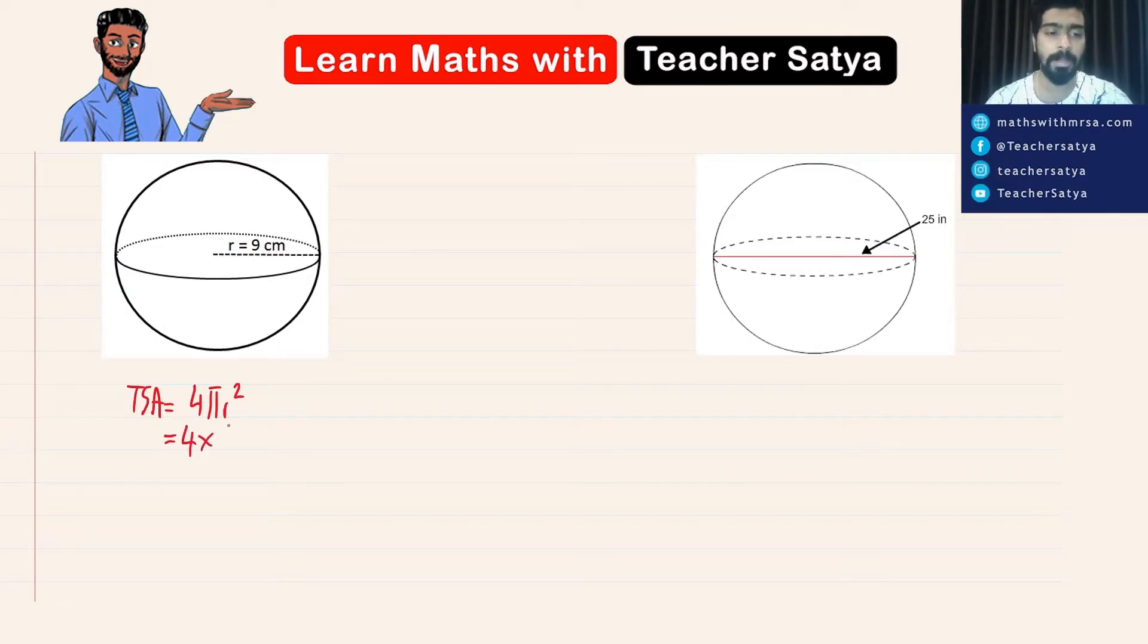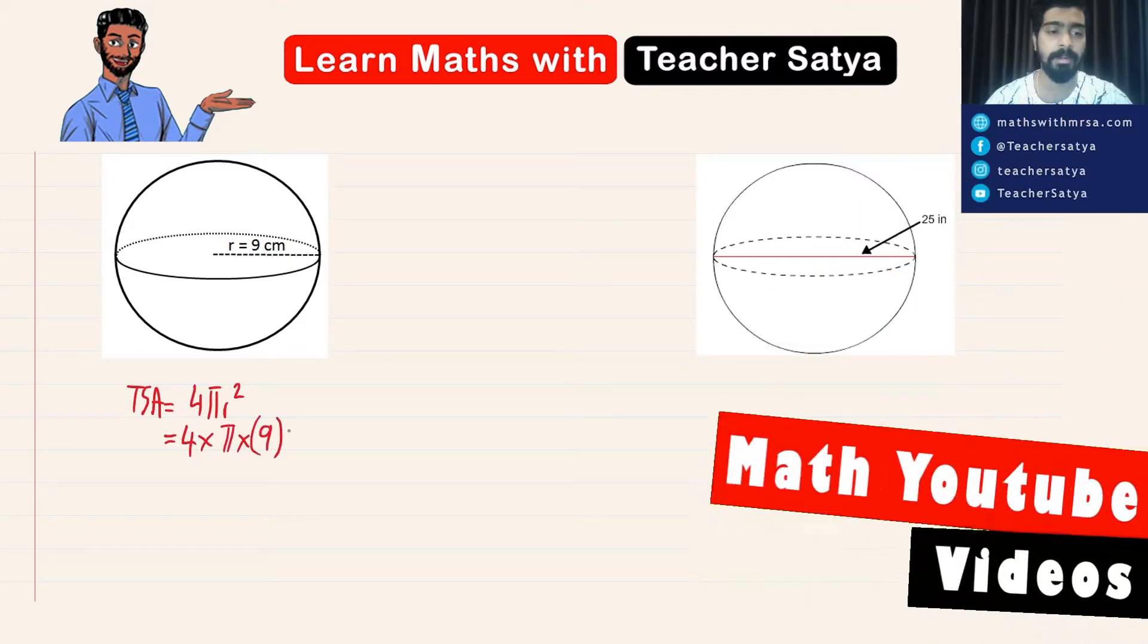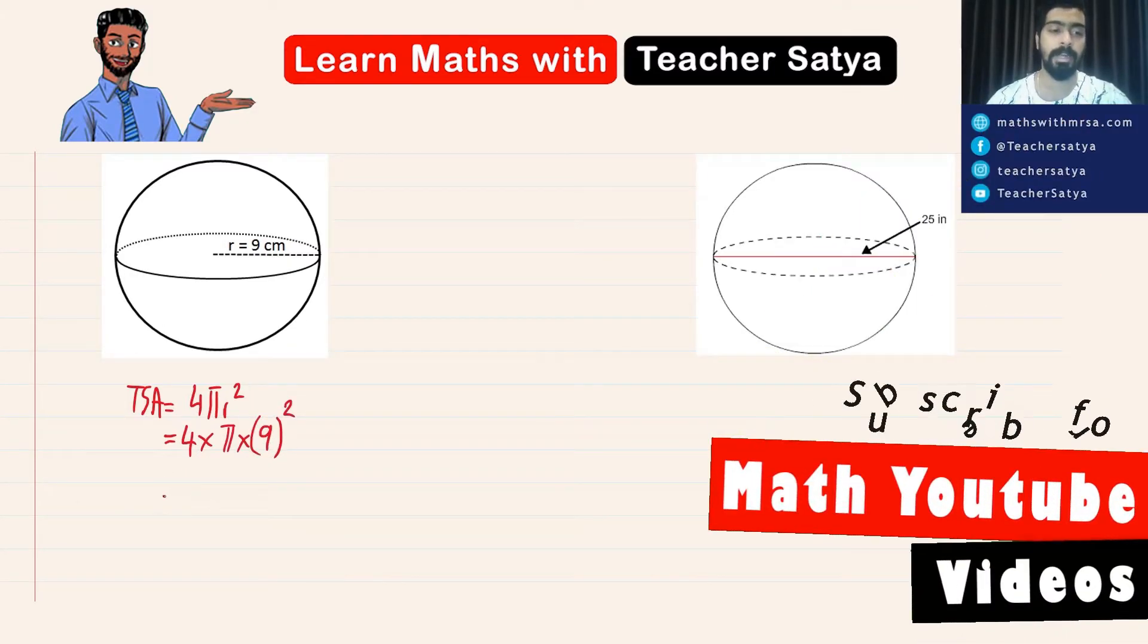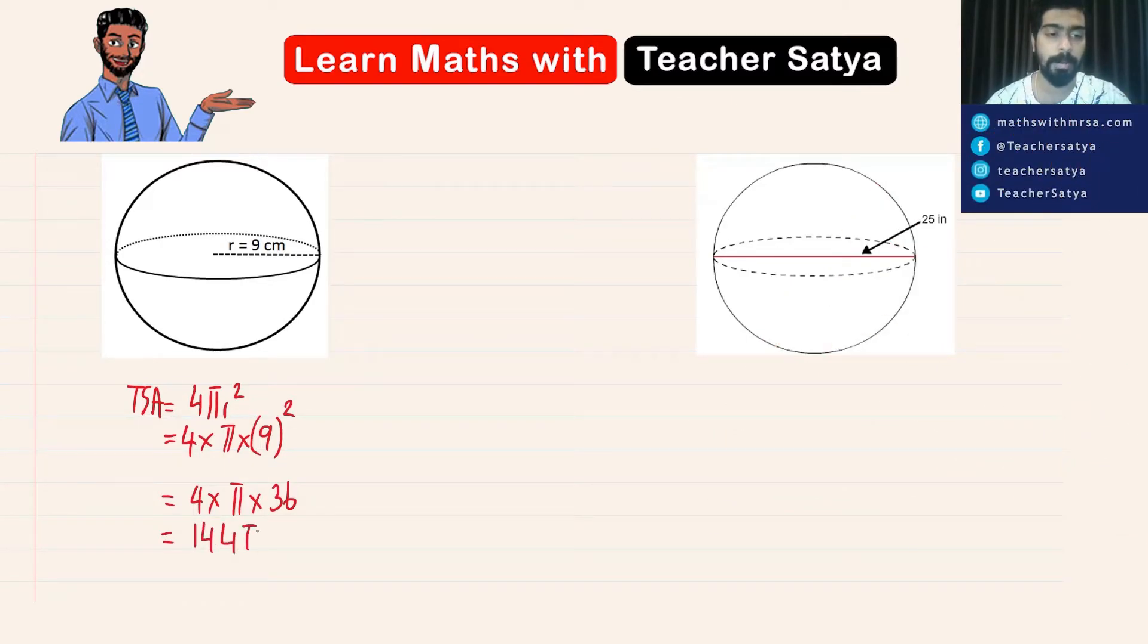So we have 4 multiplied by π multiplied by 9 to the power of 2, which will have 4 times π times 36, which is equal to 36 times 4, giving us 144π.